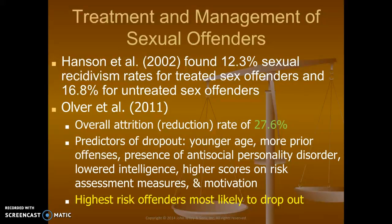Predictors of dropout in treatment programs include: being younger, having more prior offenses, presence of antisocial personality disorder, lower intelligence, higher scores on risk assessment measures, and motivation. The highest-risk offenders were also the most likely to drop out of treatment. It's hard to keep them in treatment — often attendance is predicated on court orders or probation requirements to stay out of jail. When going to group or individual treatment, the motivation is sometimes purely legal, not because they necessarily see anything wrong with themselves or want to get better.